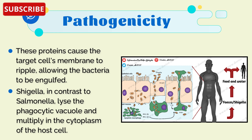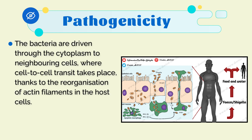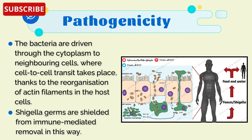These proteins cause the target cell's membrane to ripple, allowing the bacteria to be engulfed. Unlike Salmonella, Shigella disrupts the phagocytic vacuole and multiplies in the cytoplasm of the host cell. The bacteria are driven through the cytoplasm to neighboring cells where cell-to-cell transfer takes place, thanks to the reorganization of actin filaments in the host cells. In this way, Shigella bacteria are shielded from immune-mediated removal.